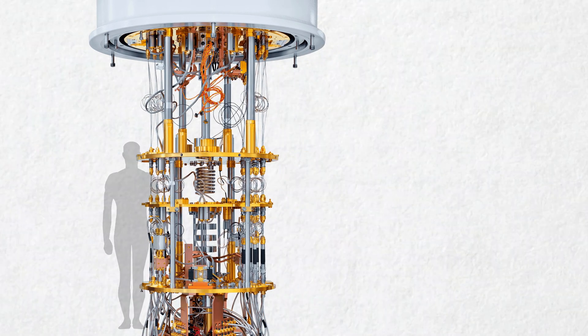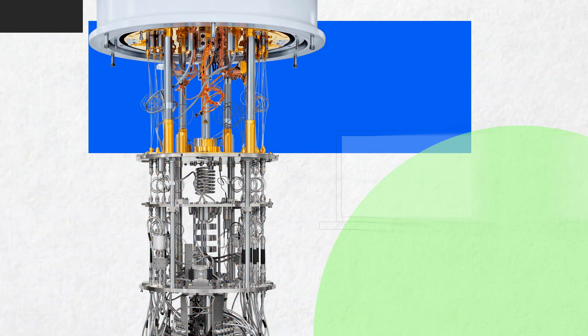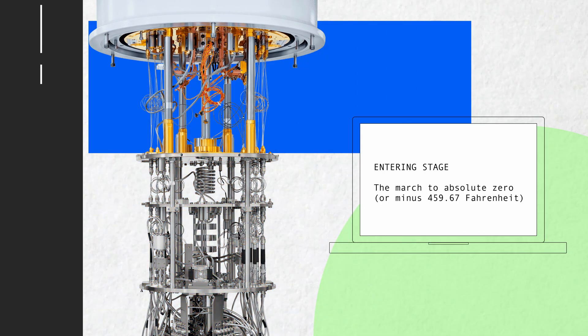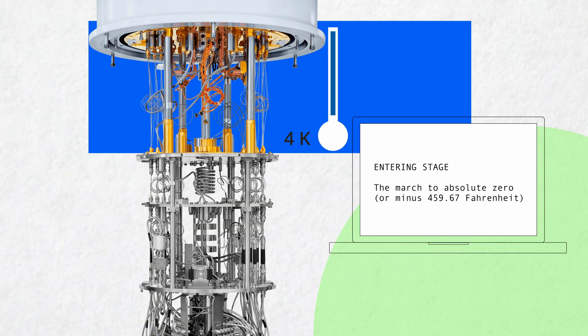Starting at the top of the computer, at the 4 Kelvin stage, at negative 269 degrees Celsius, this shelf is the warmest part of the fridge. Warm here is a relative term, because you're nearing the absolute zero temperature at 4 degrees Kelvin.